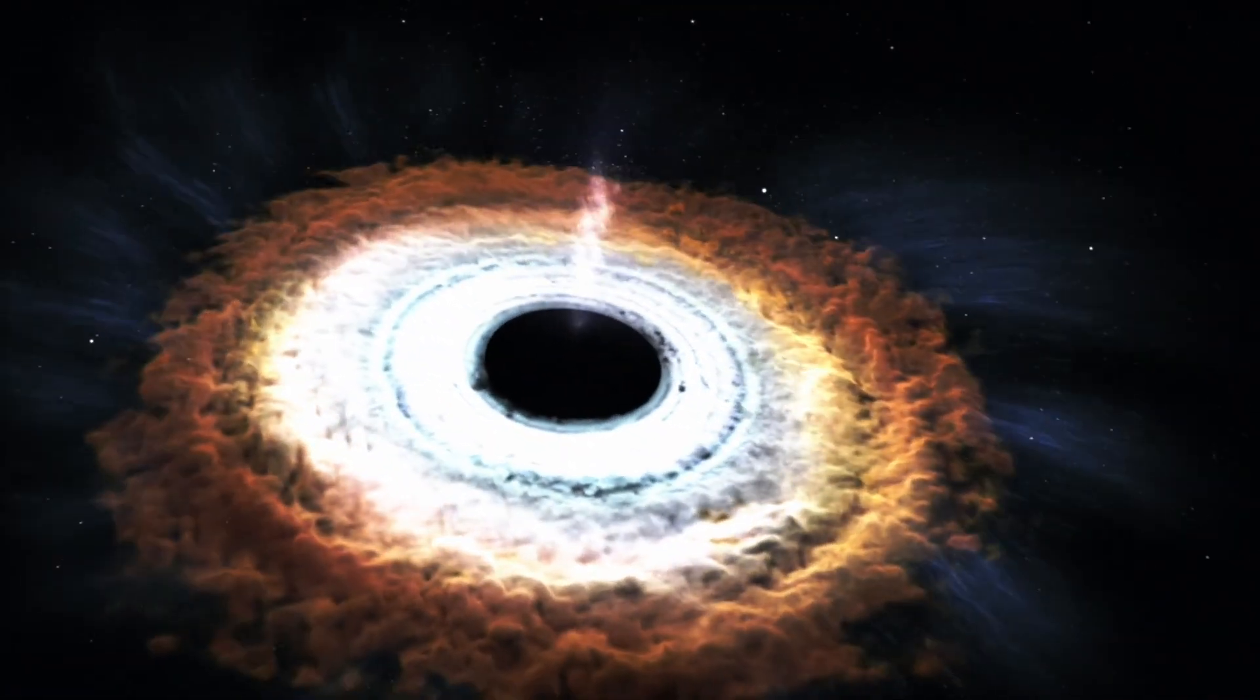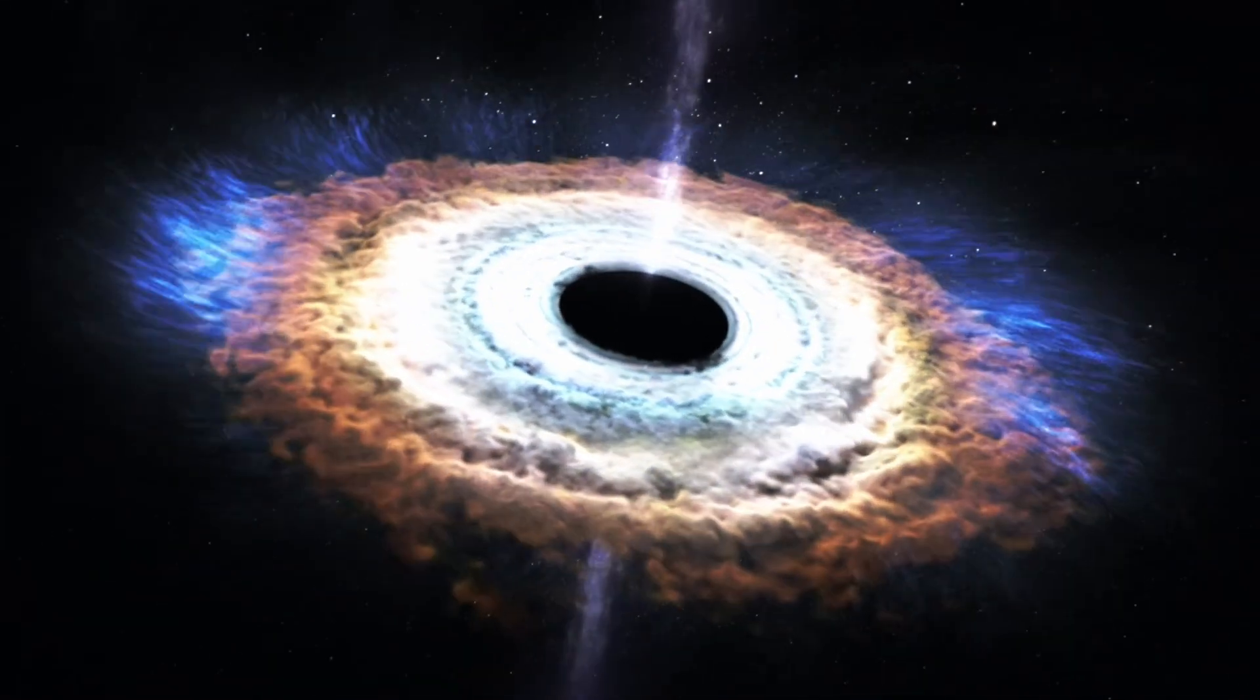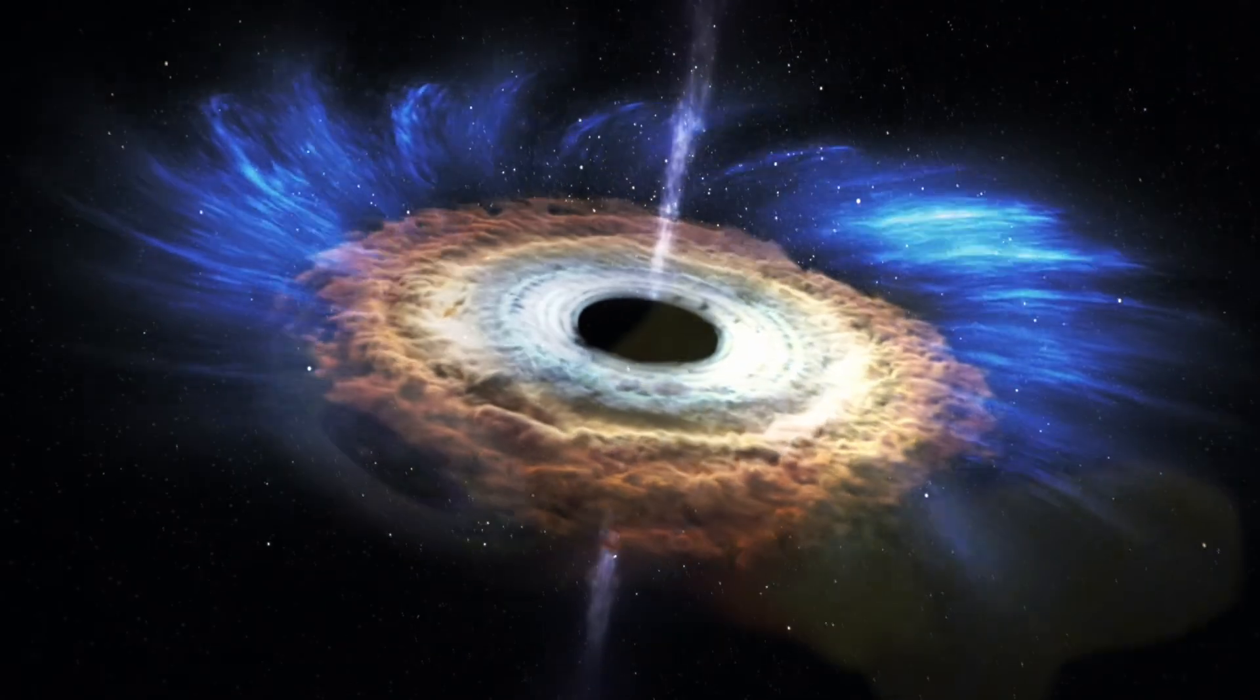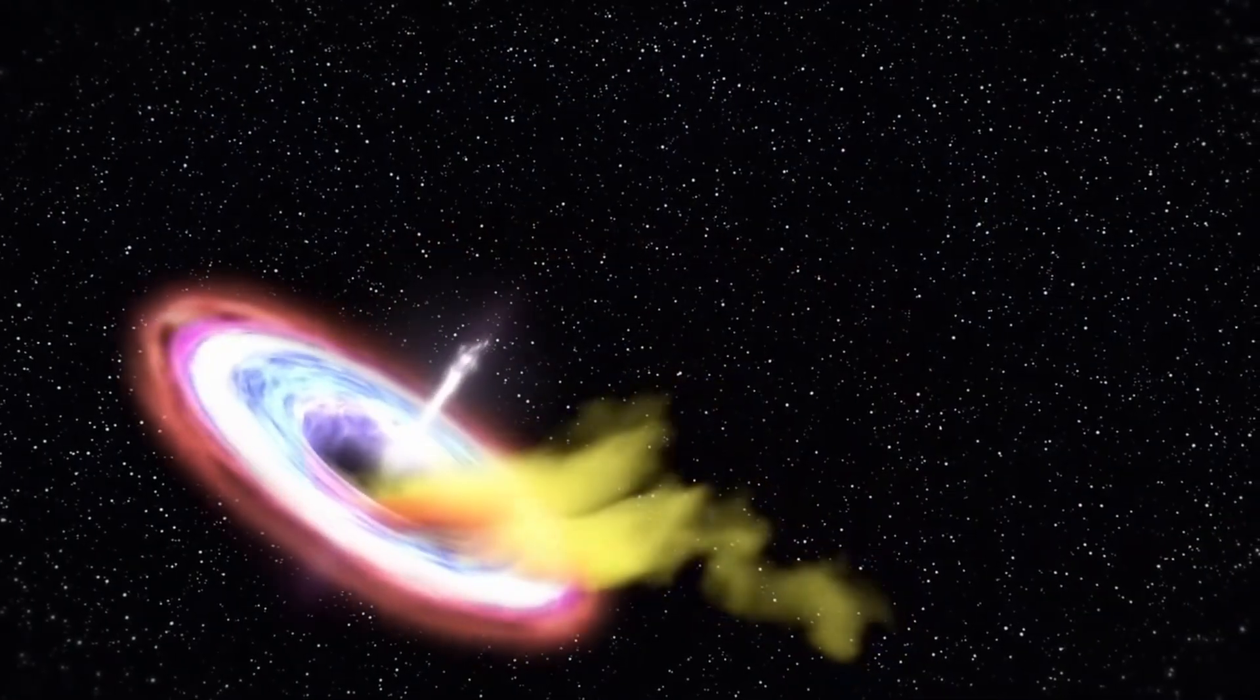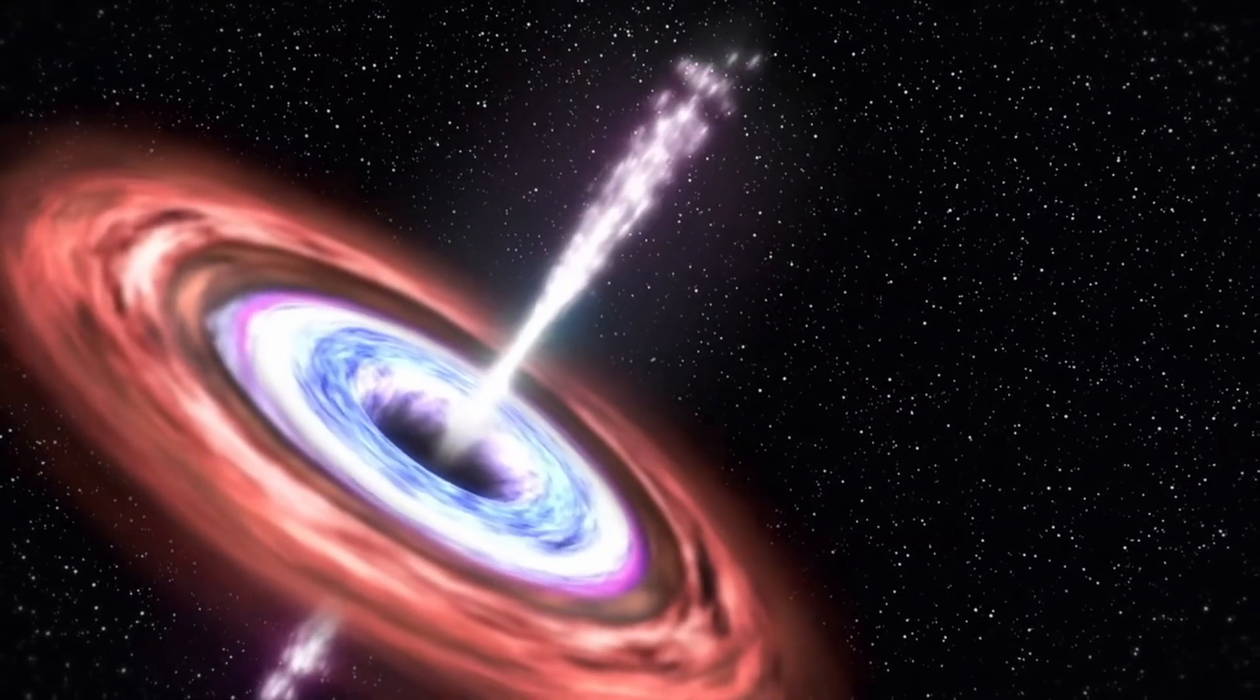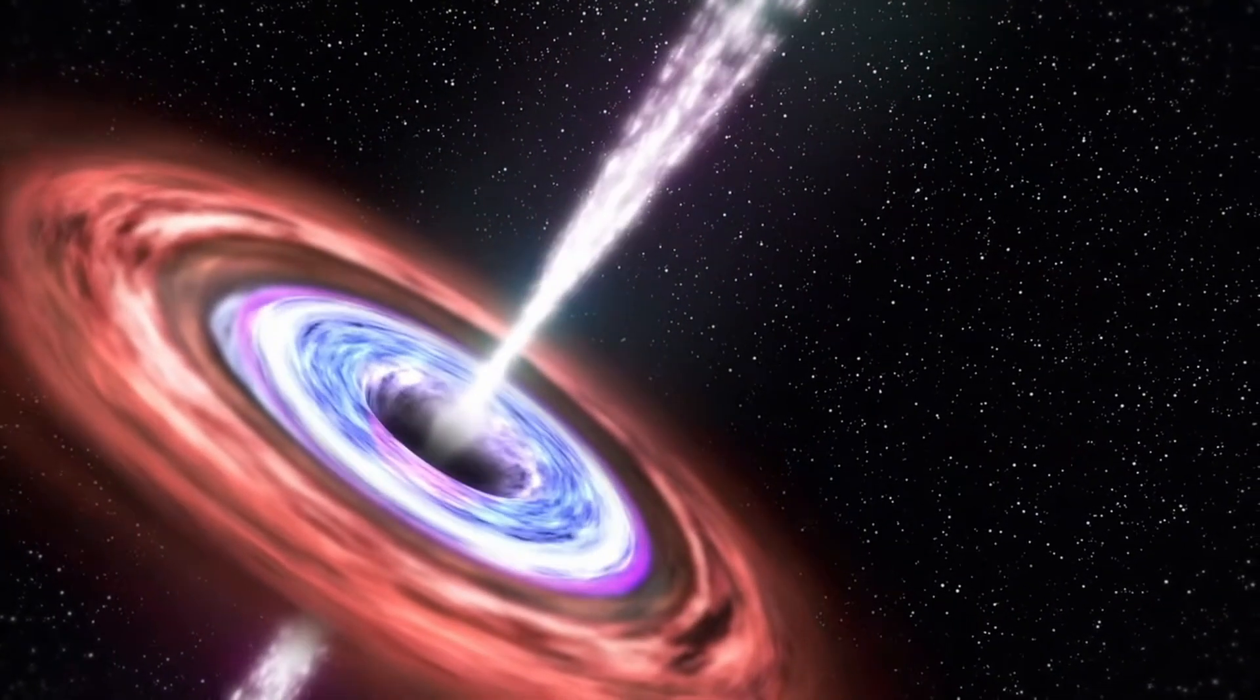This creates the accretion disk. The material in the accretion disk can move at incredibly high speeds, some reaching up to 70% the speed of light. This material heats up as it approaches the black hole, leading to temperatures in the millions of degrees. This heat generates the intense energy that is emitted by quasars, creating the brightest blast of photons in the universe.